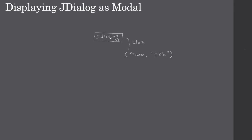In our case we are going to display JDialog as a modal dialogue, so we cannot interact with the frame when the dialogue is displayed. A dialogue can also be displayed as modeless, where you can access both. To make this dialogue modal, we call setModal before displaying it. We also call setVisible passing true or false — true makes it visible, false hides it.